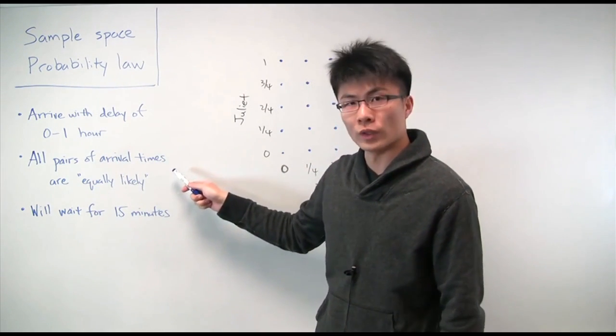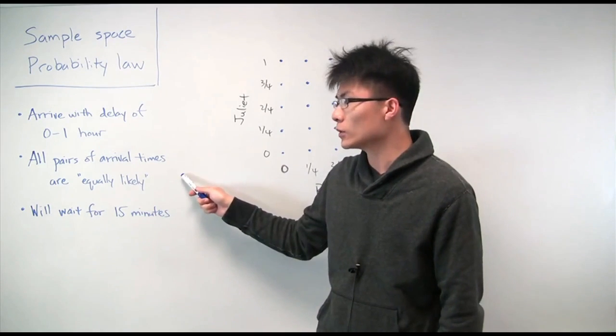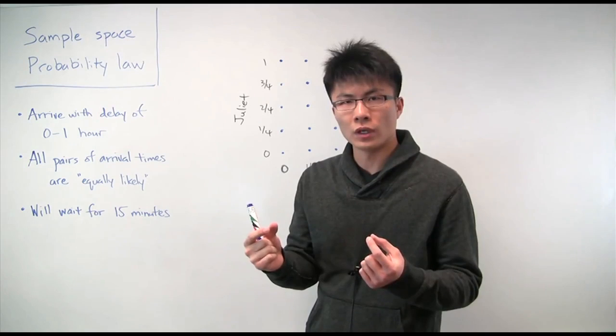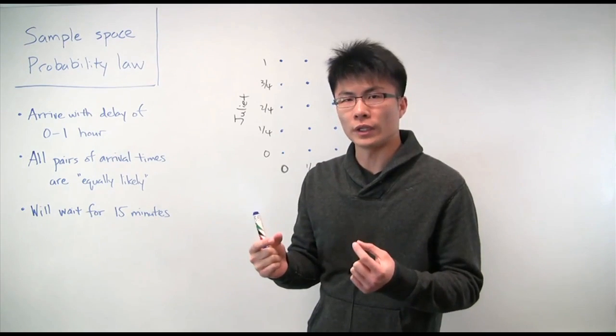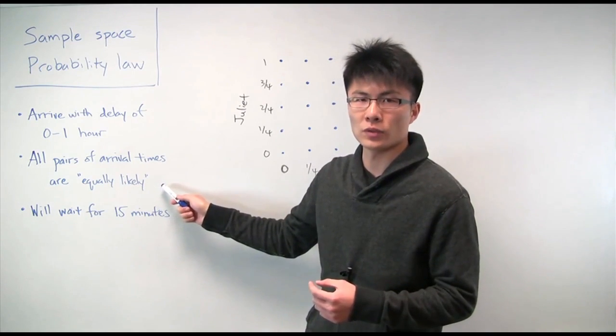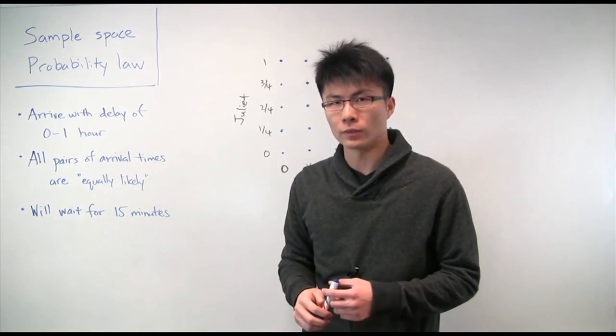The other thing we assume in this problem is that all pairs of arrival times - the time that Romeo arrives paired with the time that Juliet arrives - all of these pairs are equally likely. I put this in quotes because we haven't really specified exactly what this means, and we'll come back to that in a bit.